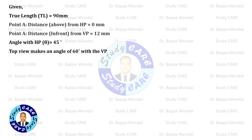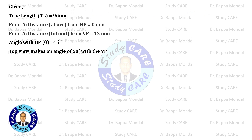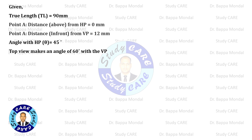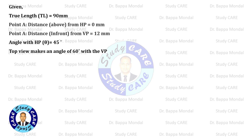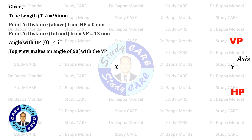Let's see what data are given. True length equals 90 mm. Point A is in the HP and its distance from VP equals 12 mm. Angle with HP equals 45 degrees. Top view makes an angle of 60 degrees with the VP.